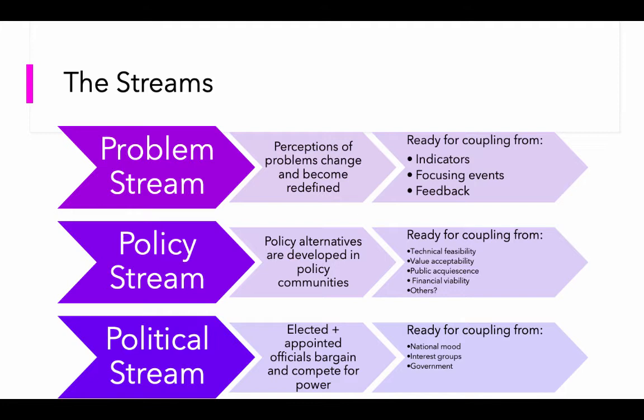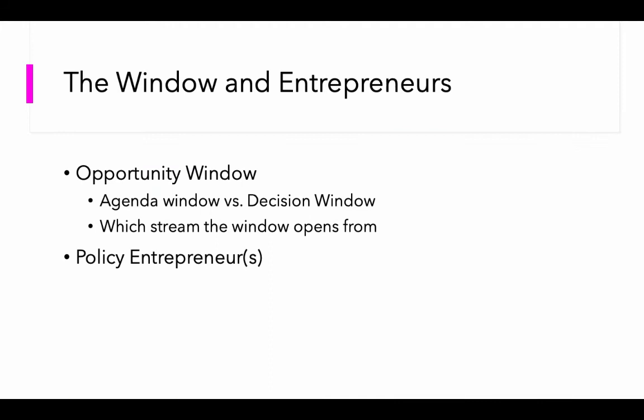The framework that multiple streams sets up is that there are certain key points at which all of these things can come together, and what we experience when they do is a window of opportunity. Policy windows are, as Kingdon says — and he is the one ultimately credited with coming up with multiple streams theory — a fleeting opportunity for advocates of proposals to push their pet solutions or to push attention to their special problems. There's a distinction in the literature between an agenda window versus a decision window. Getting something on the agenda requires bringing the three streams together, as does getting it ultimately passed.